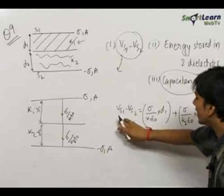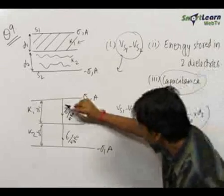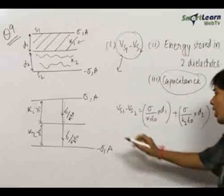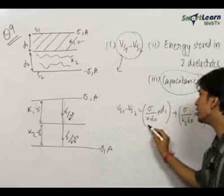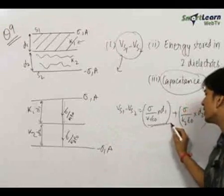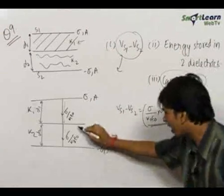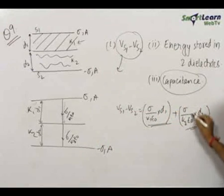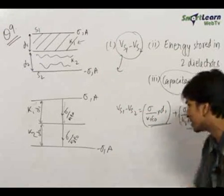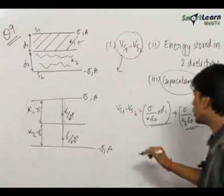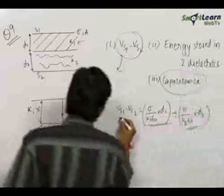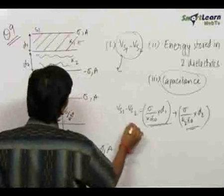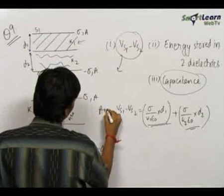As we know, if we go in the direction of the electric field the potential reduces. So while going from one plate to the other, the potential reduces by E into d for each region. Therefore V_s1 minus V_s2 equals sigma d1 upon k1 epsilon zero plus sigma d2 upon k2 epsilon zero. This is our answer to the first part.